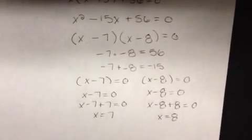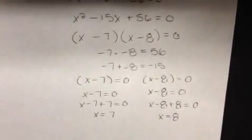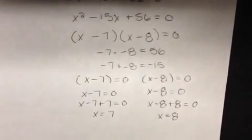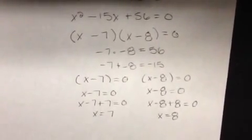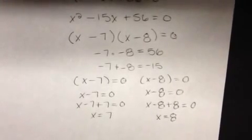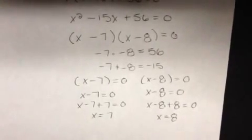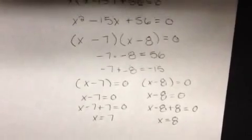My two factoring numbers are x equals 7 and x equals 8. Those are the answers I get solving by factoring x(x - 15) + 56 = 0. Thank you. Bye-bye.